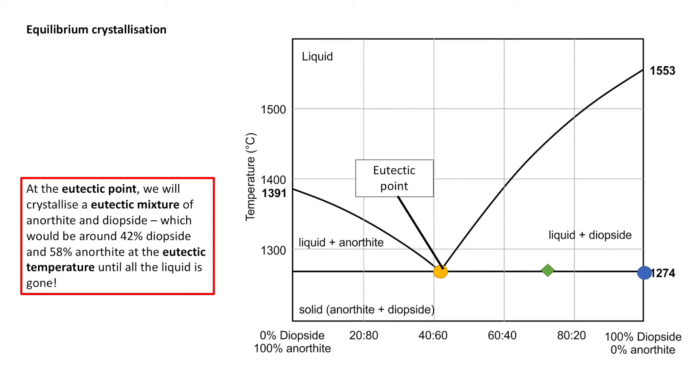This will occur at the eutectic temperature, which is 1,274 degrees, until all the liquid is consumed. Once all the liquid is consumed during this reaction, so the reaction would be liquid equals anorthite plus diopside, and the system will continue to evolve under equilibrium conditions.